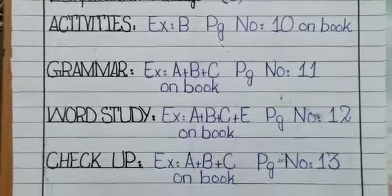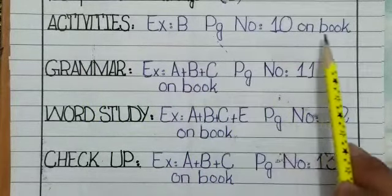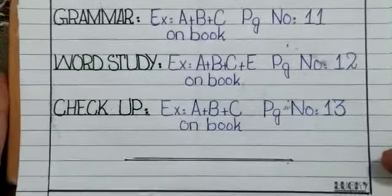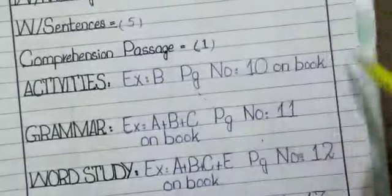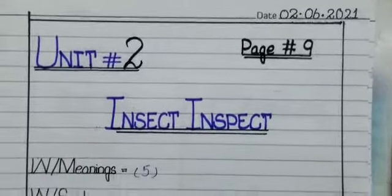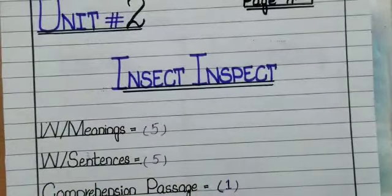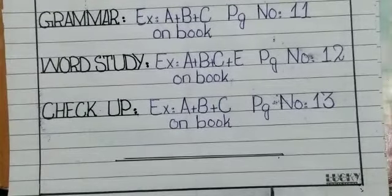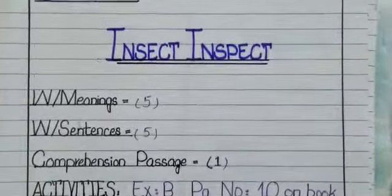For example, activities, Exercise B, Page Number 10 on the book — you will write that and make your title page like this. Make sure you have to draw the margin lines on both sides, and underline the headings as well. At the end when you complete your work, you have to draw the ending line. I hope you understood well about the title page.